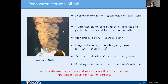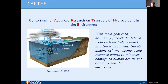As the plume rose towards the water surface, it was affected by several factors: ocean stratification, where water density varies with height; ocean currents; two violent storms during the duration of the oil spill; and the rotating environment due to the Earth's rotation. The main scientific question is: what was the resulting subsurface and surface pollutant distribution, and what can we do to mitigate the consequences of the oil spill? Shortly after the oil leak was capped, a large scientific consortium for advanced research on transport of hydrocarbons in the environment was founded.